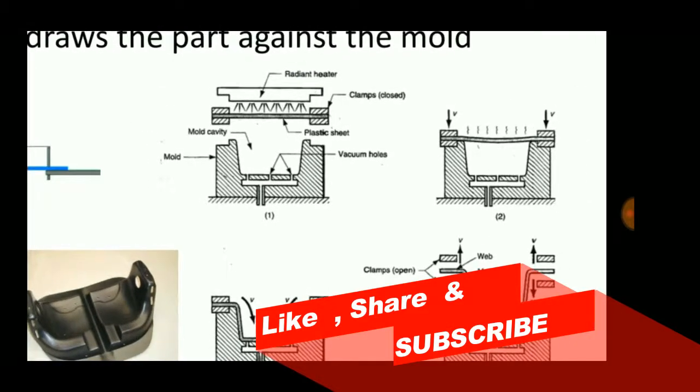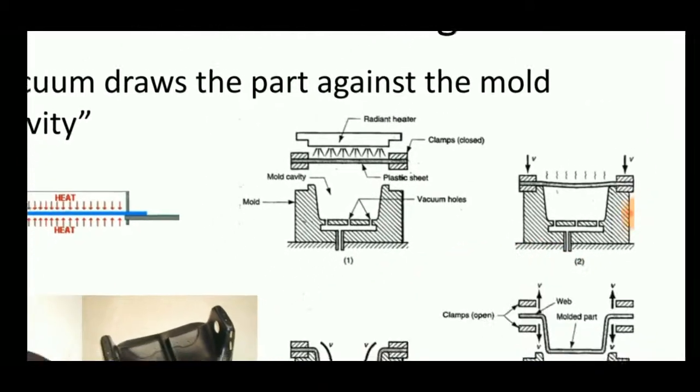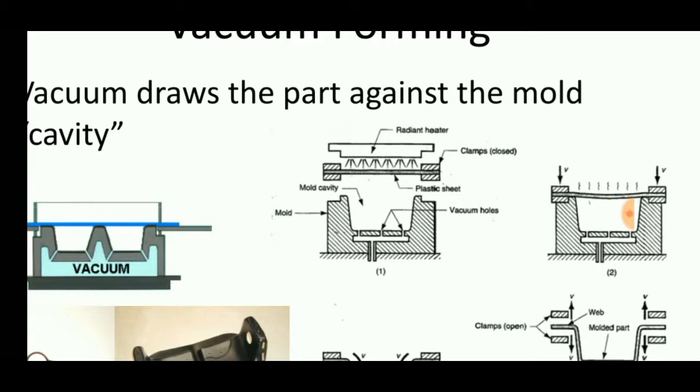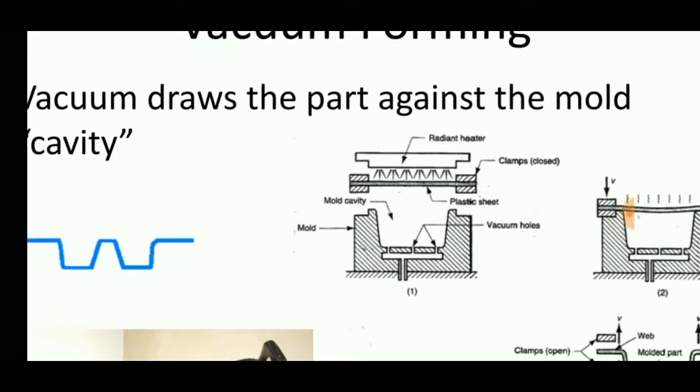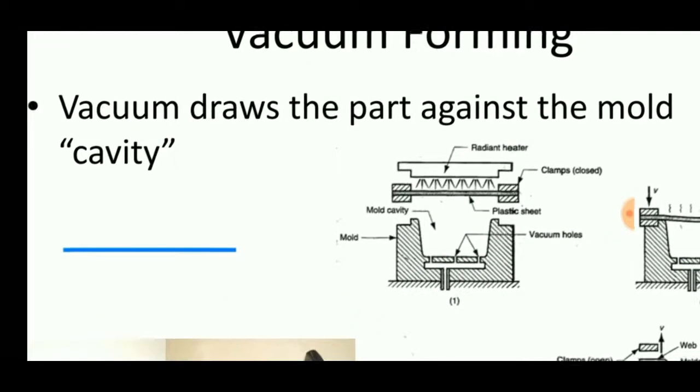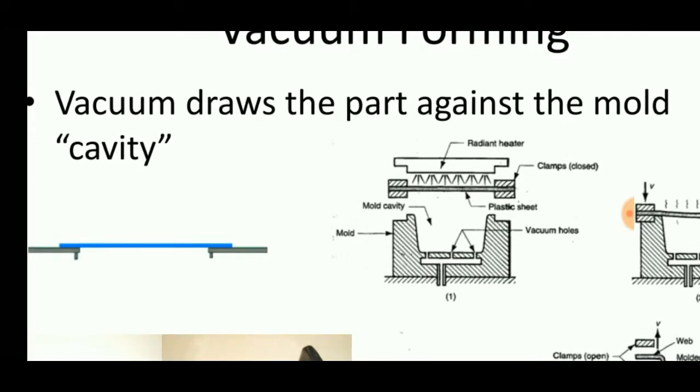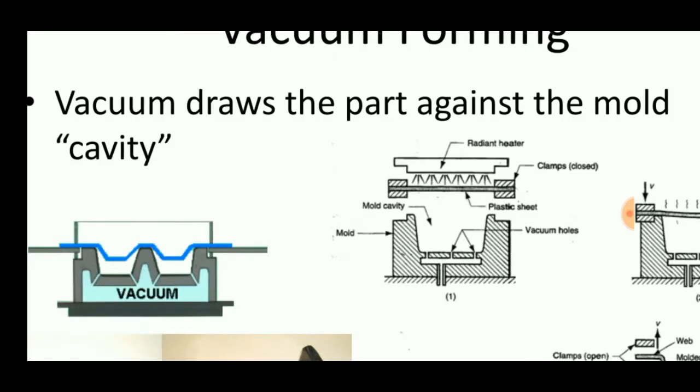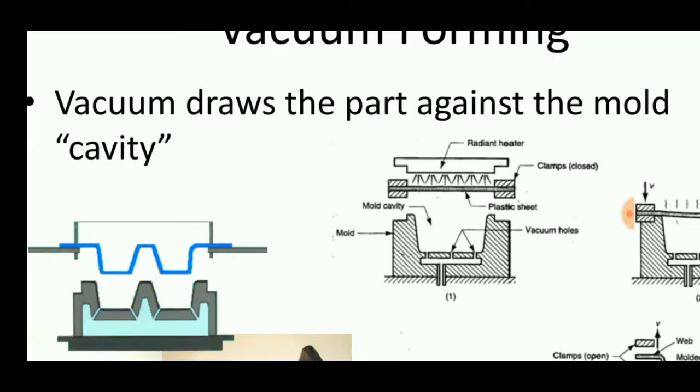It consists of a cavity or mold that uses vacuum holes to pull the sheet metal. First of all, the plastic sheet is made to fix in some adjustment or support and then it is heated using a radiation heater. Then it is fixed over the mold which contains the vacuum holes.